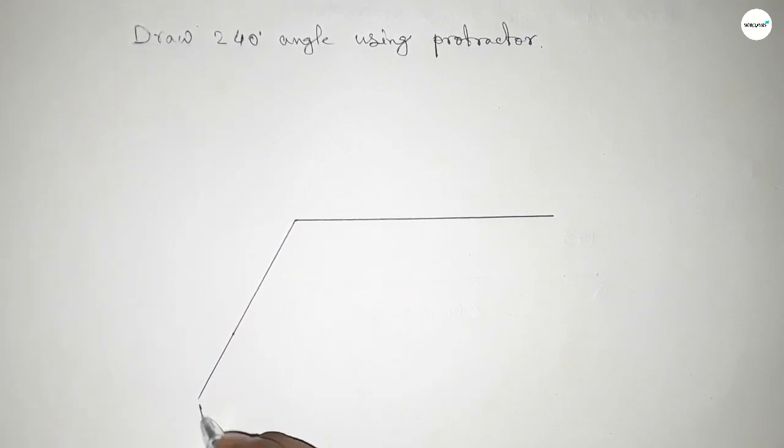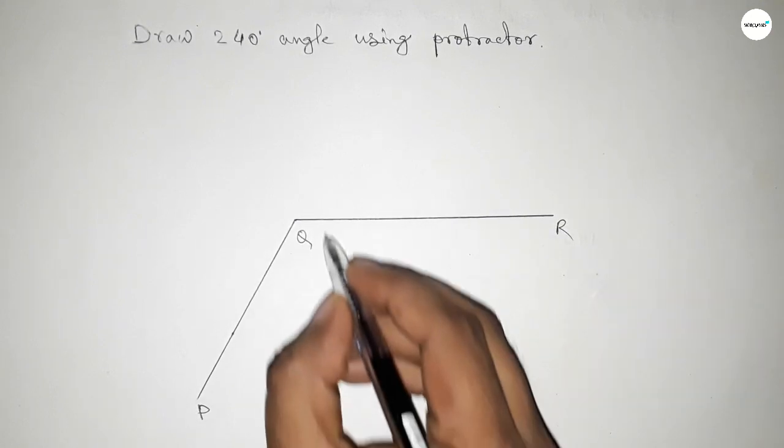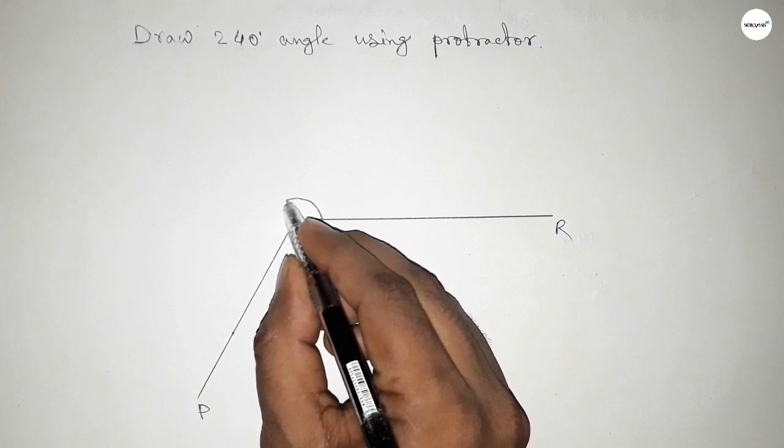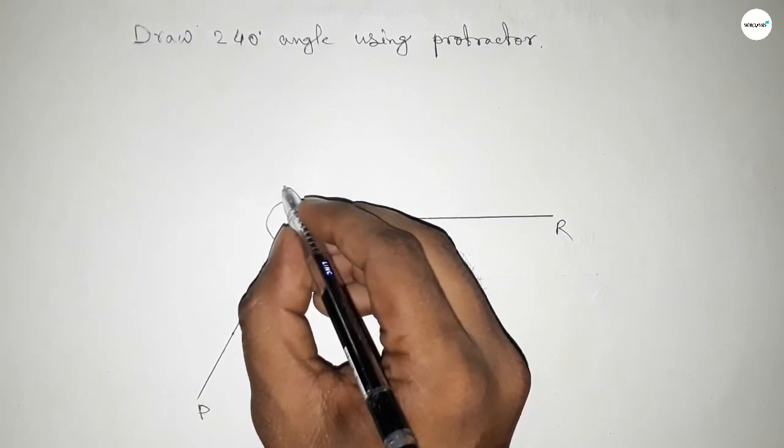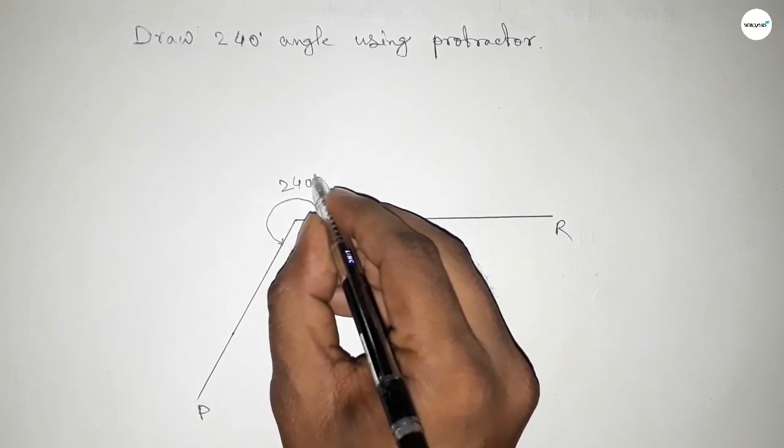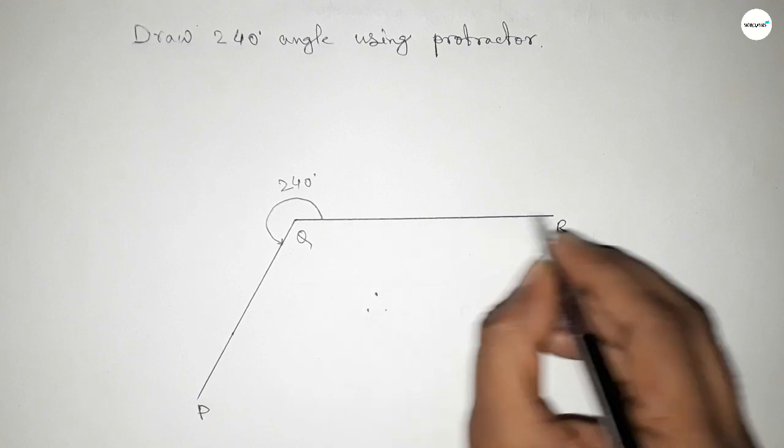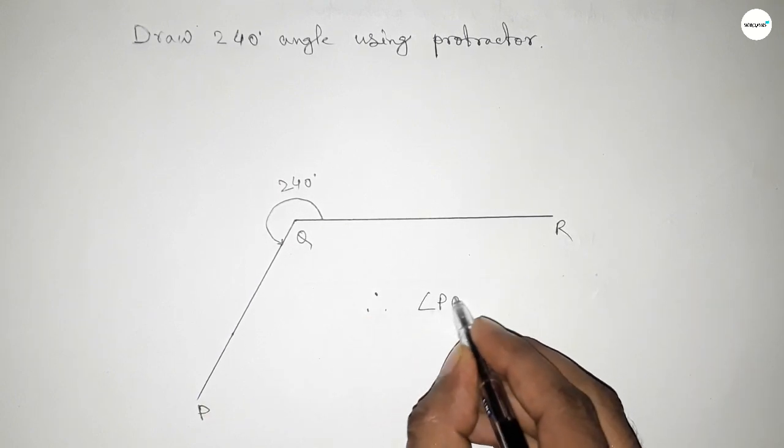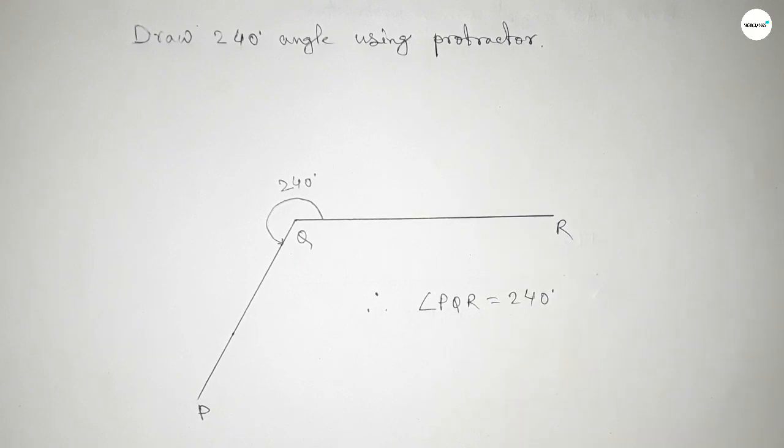We got a 240-degree angle by joining this, and this is angle PQR. This is 240 degrees. So therefore, angle PQR equals 240 degrees. That's all, thanks.